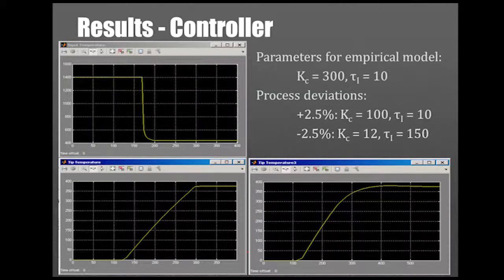We also did a root locus plot to get a value of our k to start with, which was 8.6. We tried that and it didn't fit that well, so we started fine tuning it manually from there. The result was a kc of 300 and a tau i of 10. This is for our empirical model.